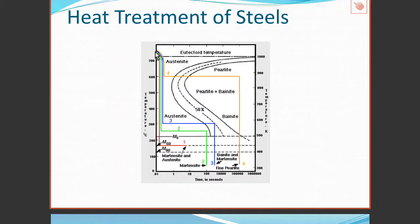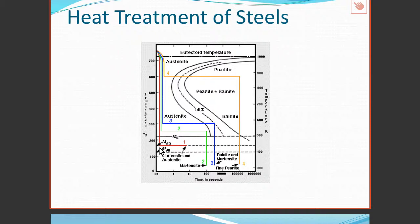Heat treatment number one takes the material above the eutectoid temperature so it's all austenite, and then allows the temperature to drop precipitously. When we do that, we miss the start line for any kind of transformation — except when we go below the martensite start temperature, where we begin forming martensite. We can see that here it's 50% transformed, which tells us that at room temperature it is possible to have some retained austenite present in the material.